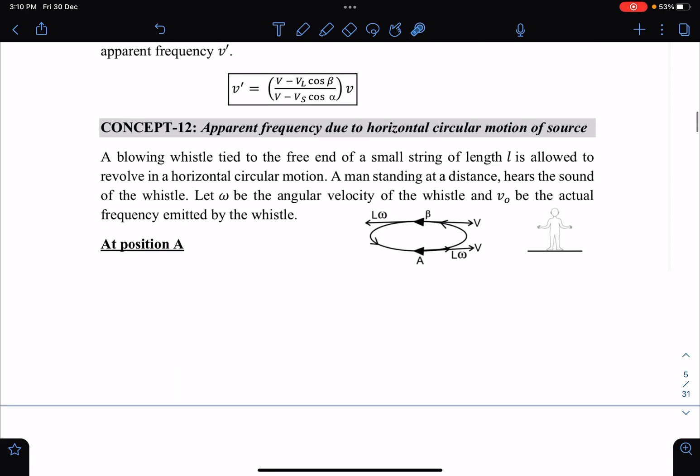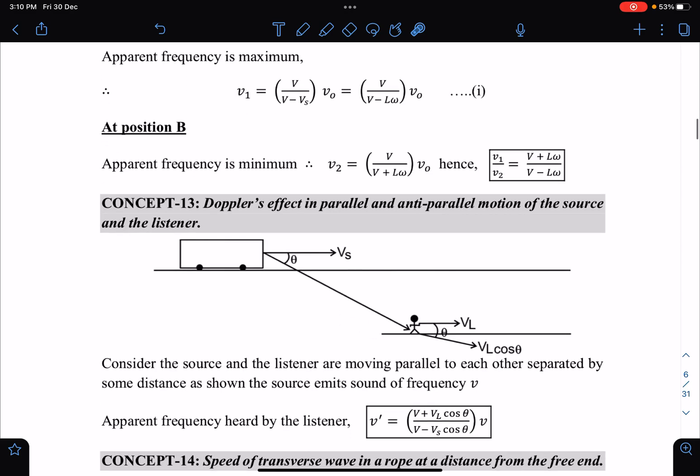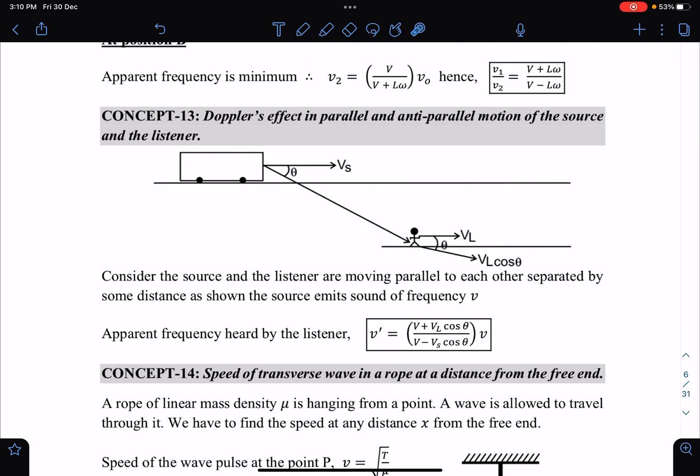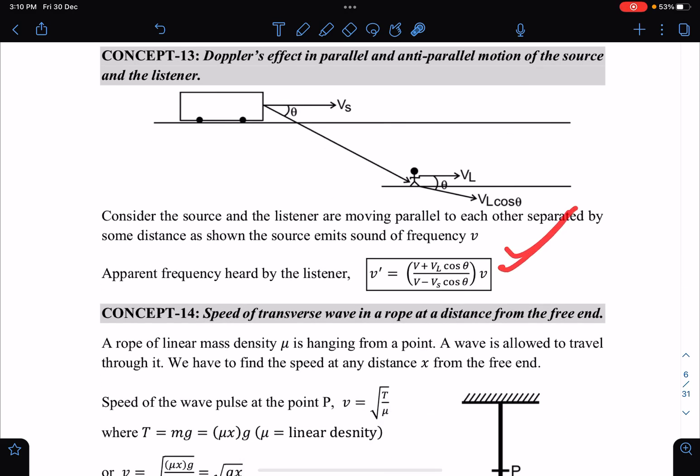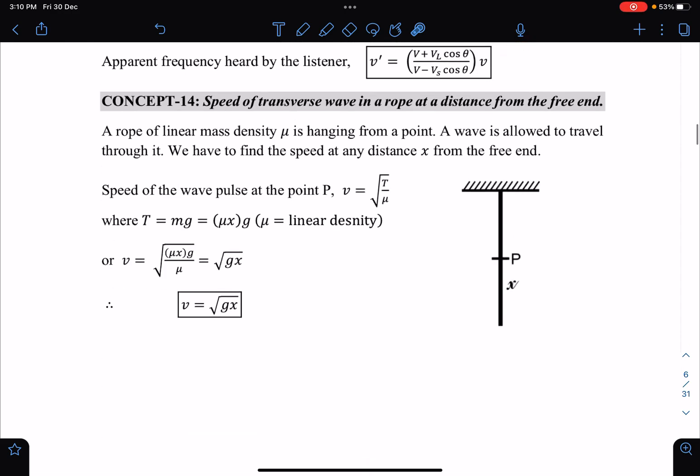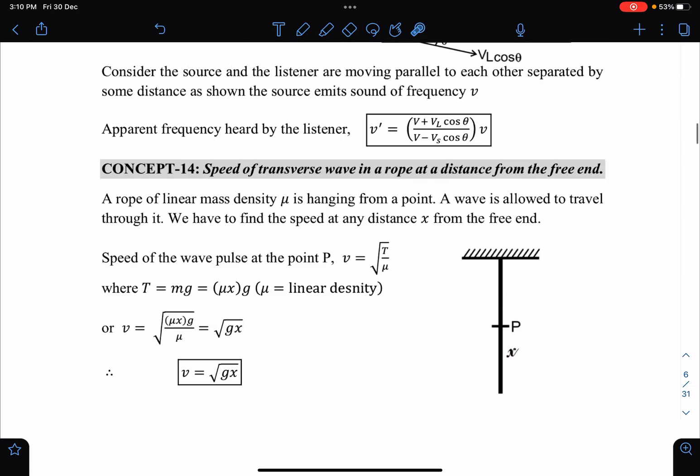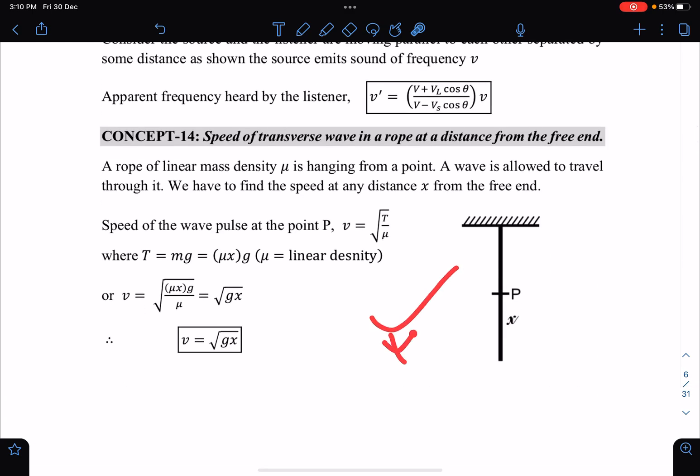Apparent frequency due to horizontal circular motion - V max and V min, nu max and nu min, and oblique Doppler effect. Speed of wave in hanging string - this question has come in JEE earlier also.